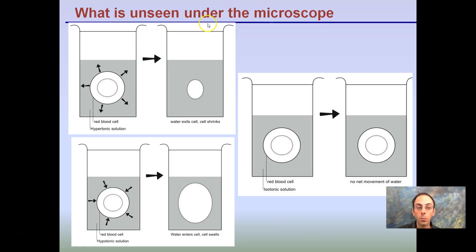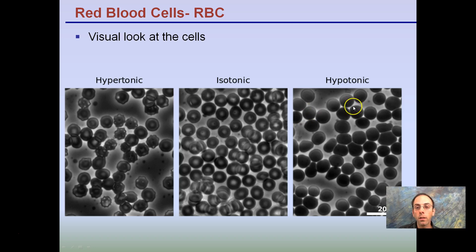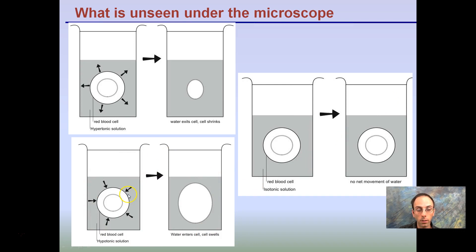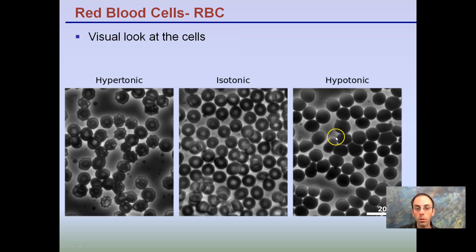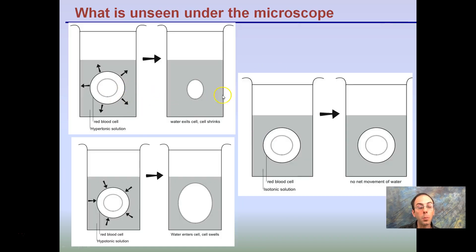Here's an example of what's seen under the microscope: water exiting the cell causes it to shrink, water entering the cell causes it to swell, and the middle state is how it should look. Flipping back — hypotonic is the swelling, isotonic is how they should look, and shriveling up is hypertonic. Hypertonic, hypotonic, and isotonic are key terms to know and understand.